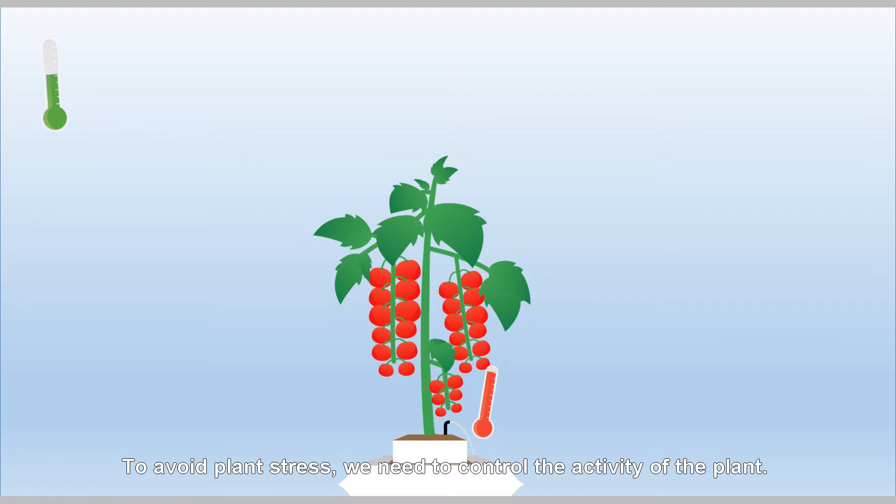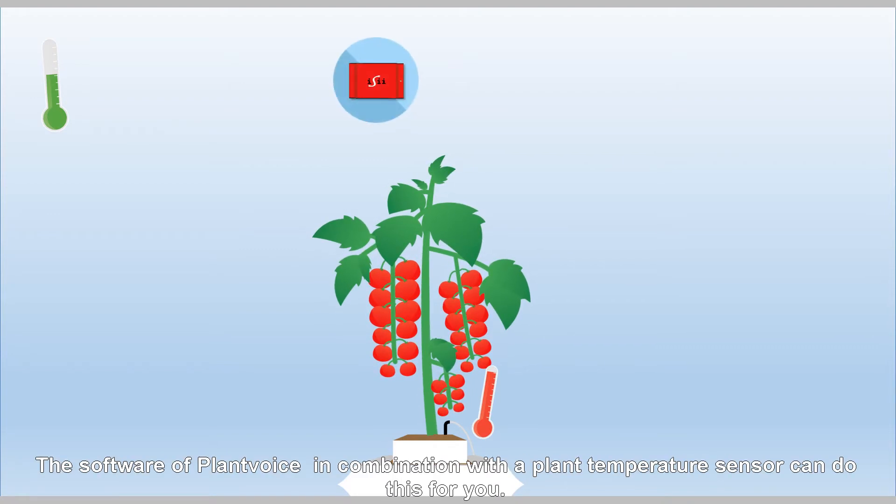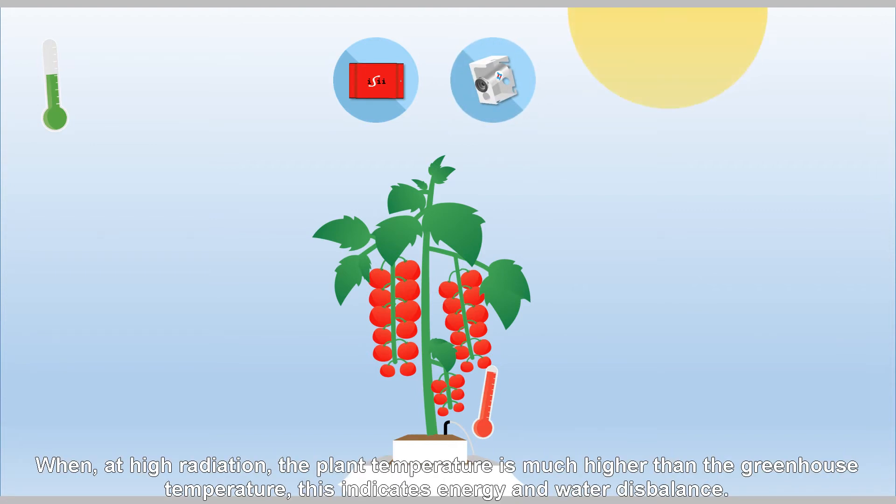To avoid plant stress, we need to control the activity of the plant. The software of PlantVoice in combination with the plant temperature sensor can do this for you. When, at high radiation, the plant temperature is much higher than the greenhouse temperature, this indicates energy and water disbalance.